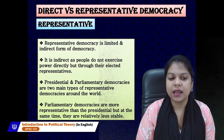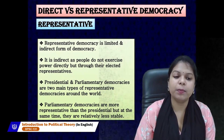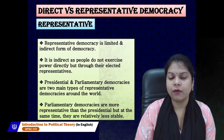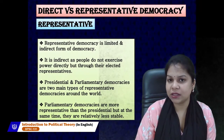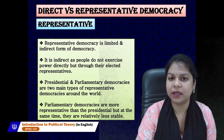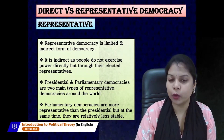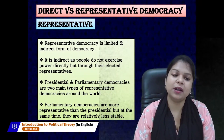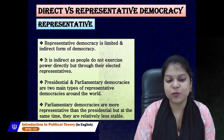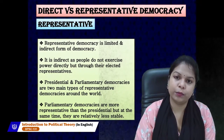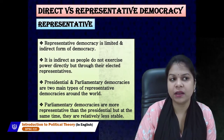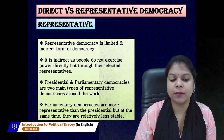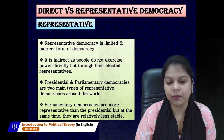Representative democracy is a limited and indirect form, where people do not exercise power directly but through elected representatives. For example, in India we elect MPs to the Lok Sabha, and those elected MPs choose the prime minister. There are two kinds of representative democracies: presidential form, where the head is the president, and parliamentary form, where the head is the prime minister. Parliamentary democracies are more representative but relatively less stable.